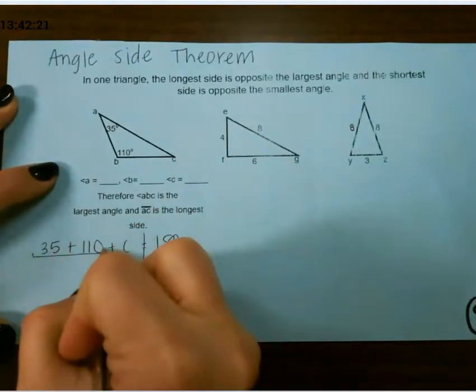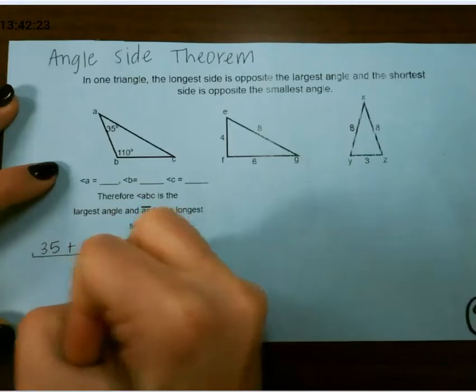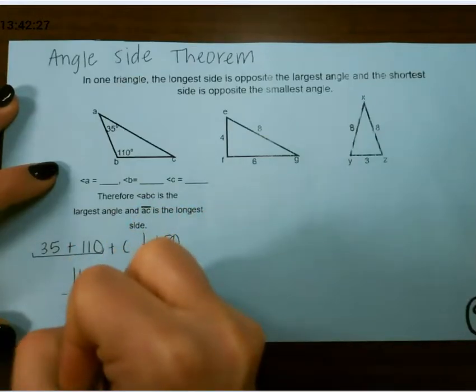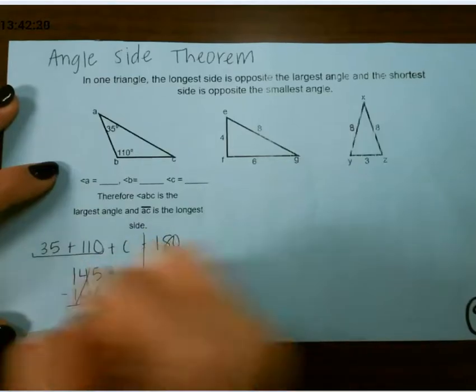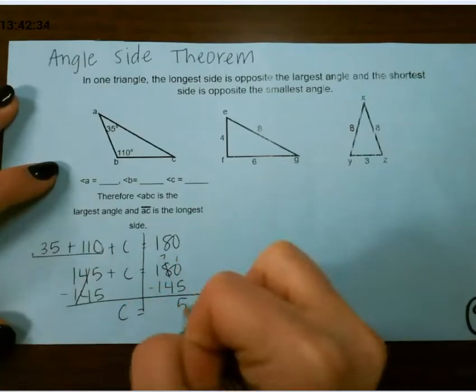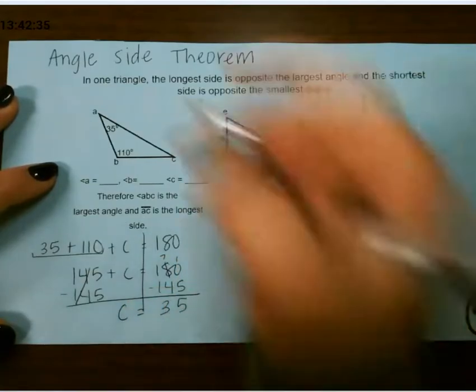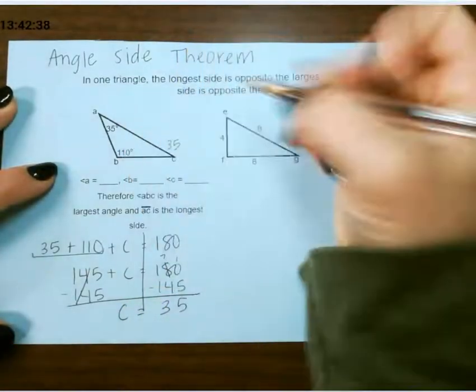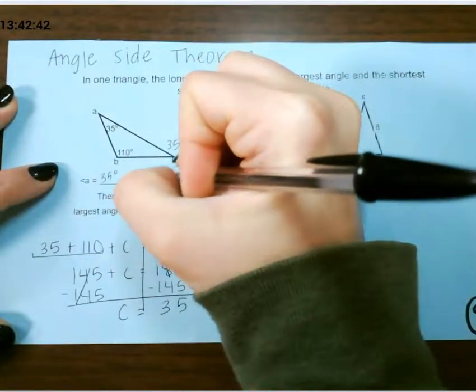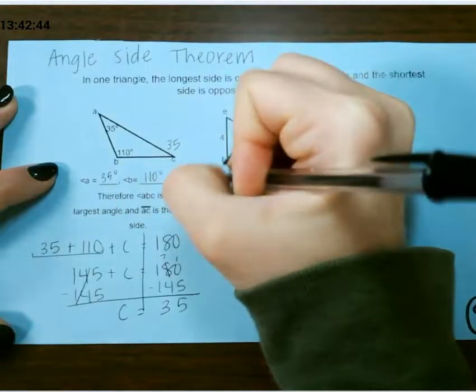These two added together is 145, and then we can subtract to figure out our third angle. So our third angle is 35. So A is 35 degrees, B is 110, and C is 35.